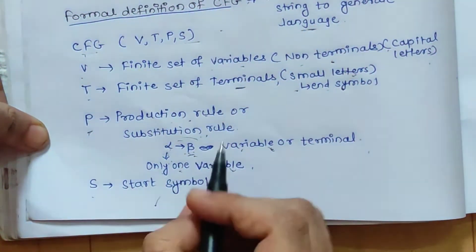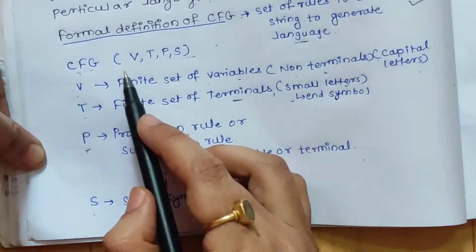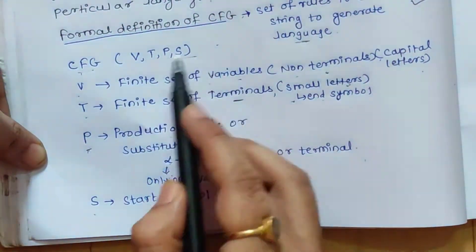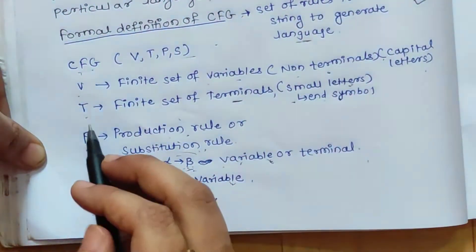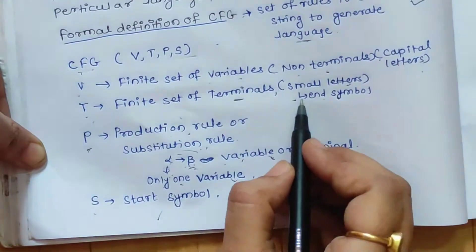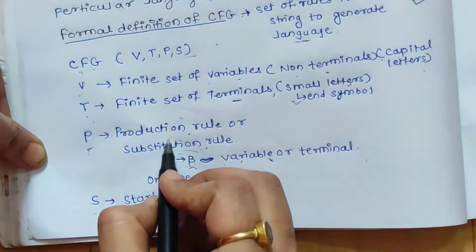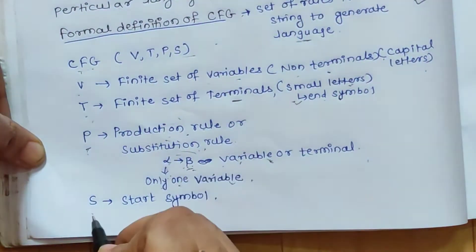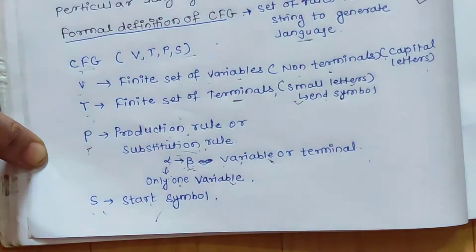This is the formal definition of context free grammar consisting of V, T, P, and S. V stands for non-terminals, T stands for the set of terminals, P stands for the production rule, and S stands for the start symbol.